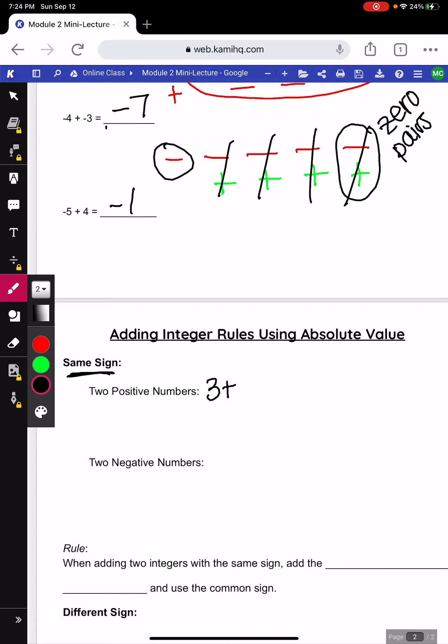For example, if I added 3 plus 2, we know that's 5. Whenever you add two positive numbers, your answer will always be positive. Add the numbers, keep the sign, that's positive.